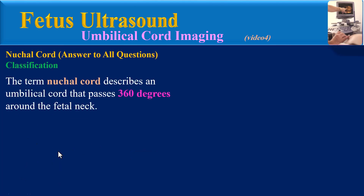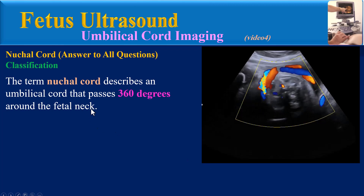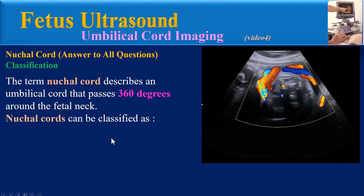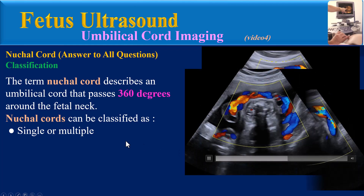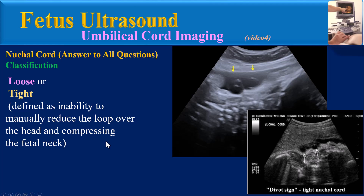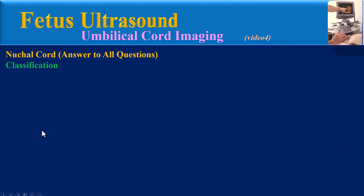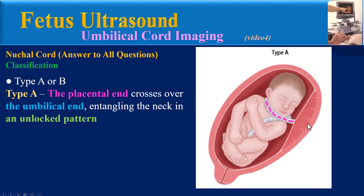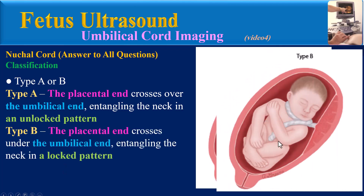Classification: The term nuchal cord describes an umbilical cord that passes 360 degrees around the fetal neck. Nuchal cords can be classified as single or multiple, and loose or tight. Tight nuchal cords are defined as inability to manually reduce the loop over the head, compressing the fetal neck. We must also classify nuchal cords as Type A or Type B. In Type A, the placental end crosses over the umbilical end, entangling the neck in an unlocked pattern. In Type B, the placental end crosses under the umbilical end, entangling the neck in a locked pattern.